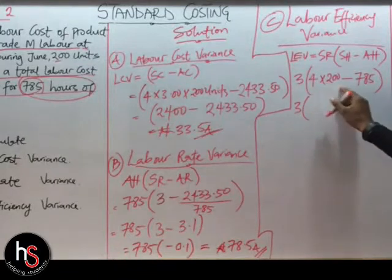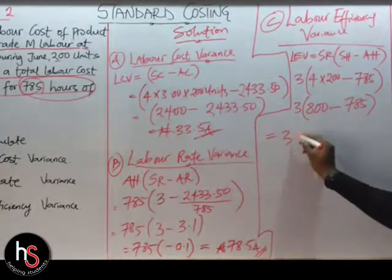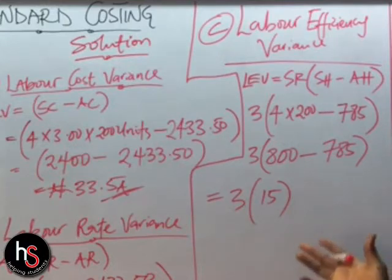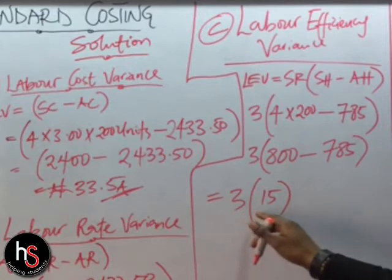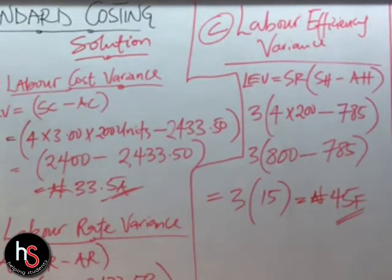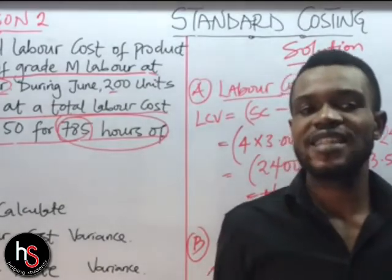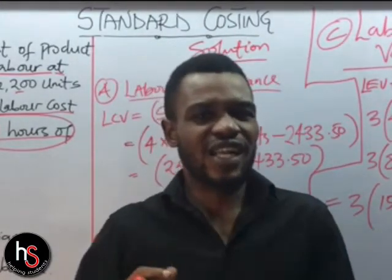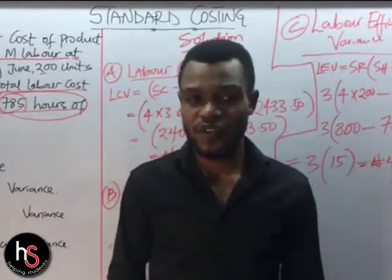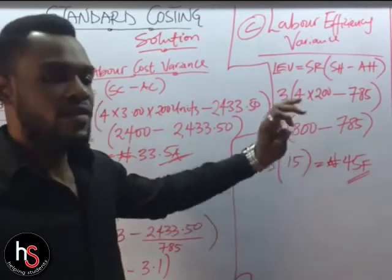So we have 3 times (800 minus 785). 4 times 200 is 800, minus 785 gives us 15. Since the result is positive, this question is going to have a favorable answer. So 3 times 15 equals 45 Favorable — we use 'F' because it is favorable. Remember: if the actual cost is less than the standard cost, or actual revenue is greater than standard revenue, it is favorable. If actual cost is greater than standard cost, or actual revenue is less than standard revenue, it is adverse, represented with a negative sign.